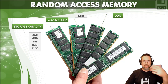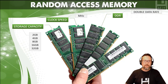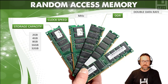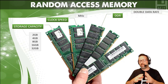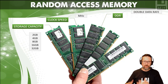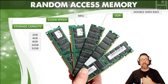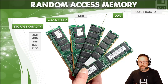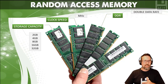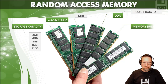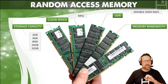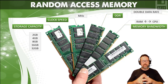Then we have DDR — like DDR2, DDR3, DDR4. DDR means double data rate. It basically means it's faster. There's a lot of technology behind it, but as CAT students we just need to know that DDR means double data rate, and DDR4 is faster than DDR3, which is faster than DDR2.